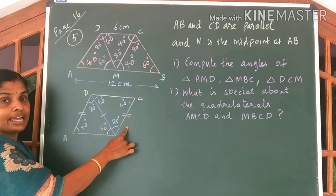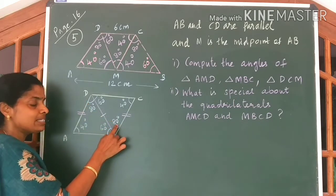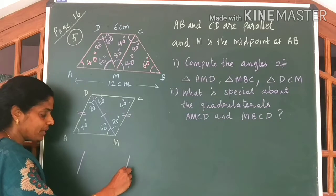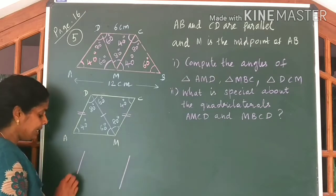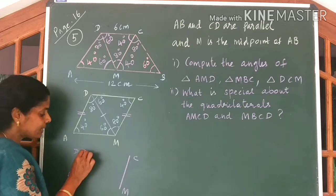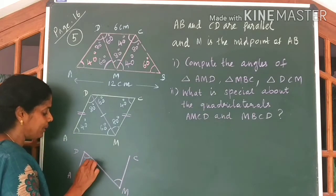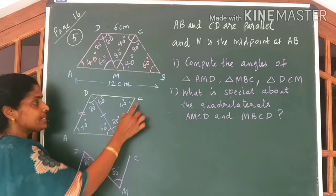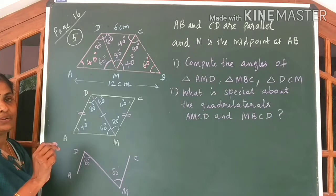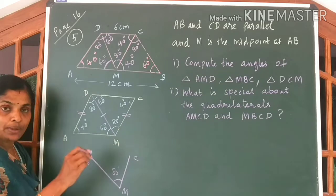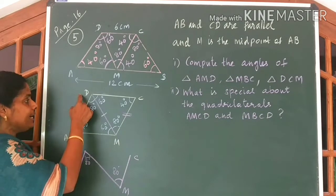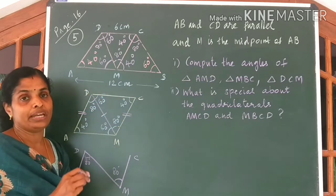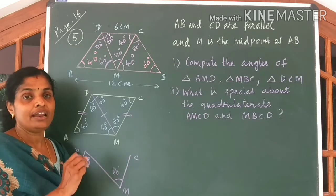Also, AD and CM are parallel, because this angle is 80 degrees and this angle is also 80 degrees — alternate angles are equal. These two lines AD and MC are cut by a line, and these two angles are given to be equal — 80 and 80. Since alternate angles are equal, the lines AD and CM are parallel. So AD and CM are equal and parallel. We were given AB and CD to be equal and parallel, and now we have proved AD and CM to be equal and parallel. Hence, AMCD can be called a parallelogram, because in a parallelogram, both pairs of opposite sides are equal and parallel.